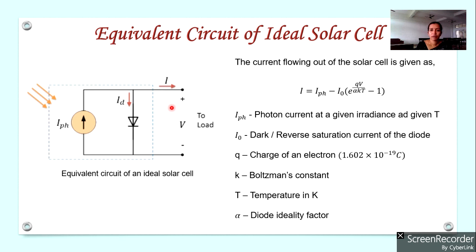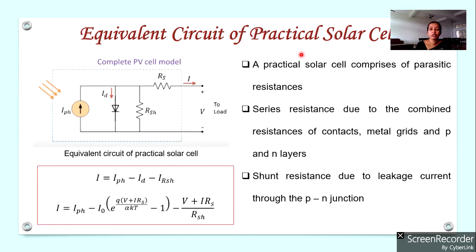Not all solar cells are ideal — there will be losses. To account for these losses, we add resistances to the equivalent circuit. Let us now consider the equivalent circuit of a practical solar cell, which comprises parasitic resistances. We need to understand where these resistances come from.